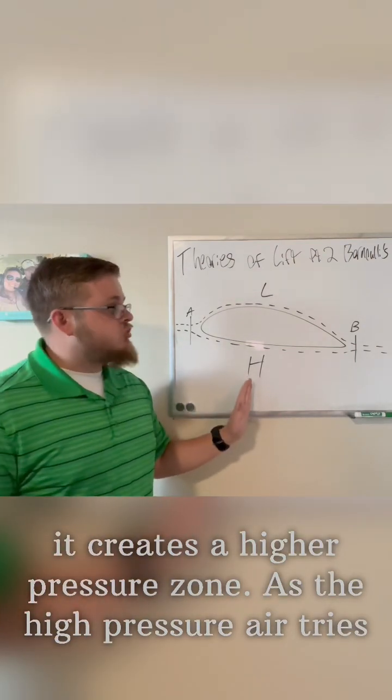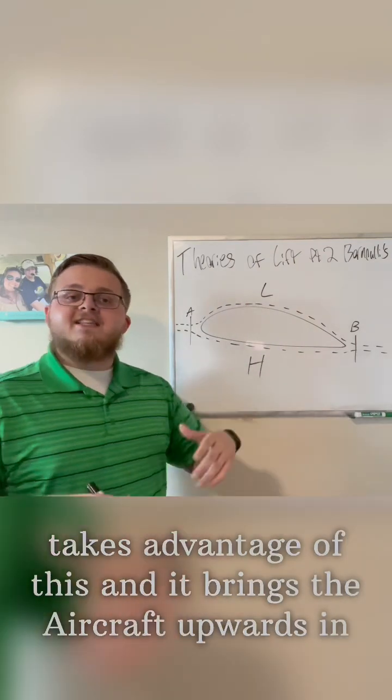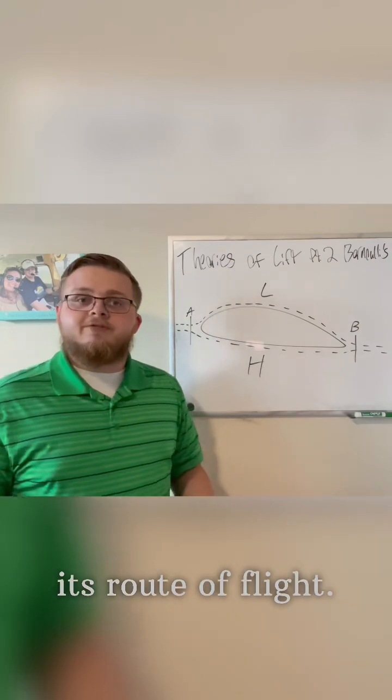And the high pressure air tries its best to get to the low pressure air, but the wing in the way takes advantage of this and it brings the aircraft upwards in its route of flight.